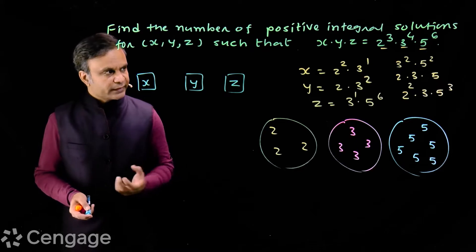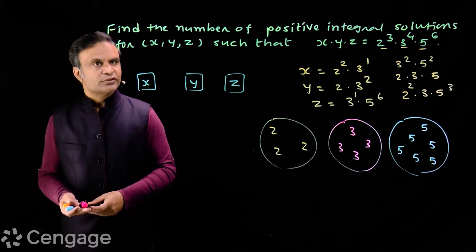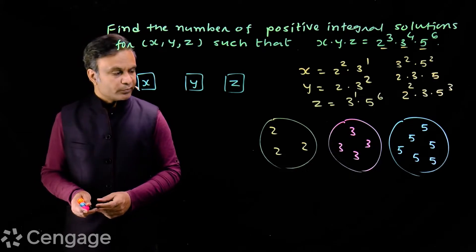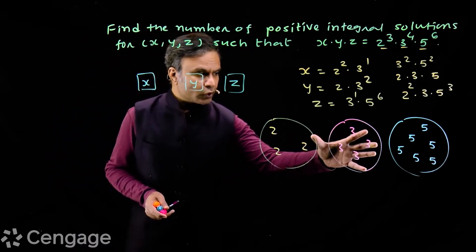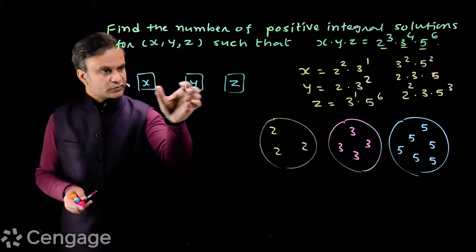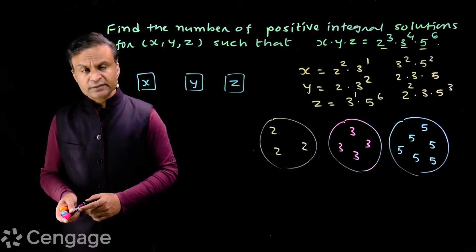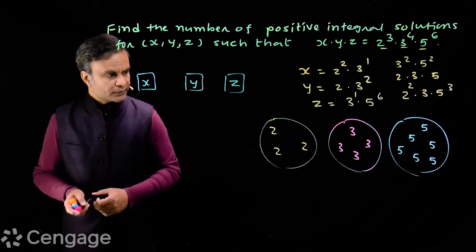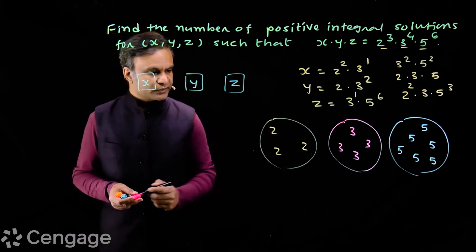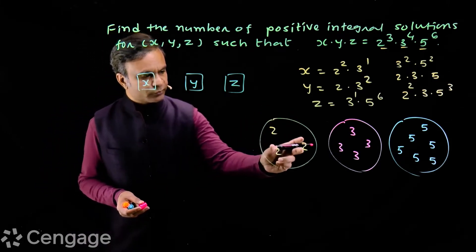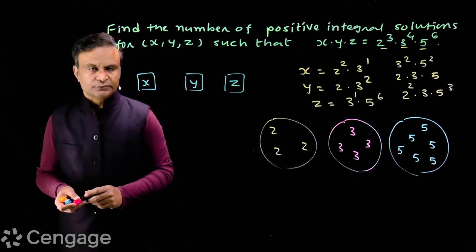We can say the number of positive integral solutions equals the number of ways we can distribute these objects into these 3 boxes named x, y, and z. So how do we do this? Here we have these 3 identical objects — how do we distribute 3 identical objects into 3 distinct boxes?